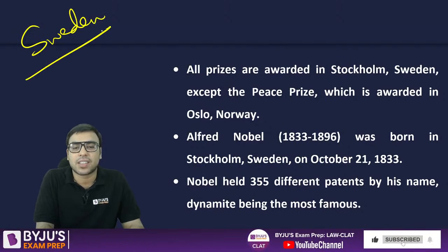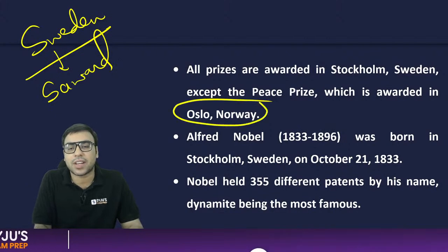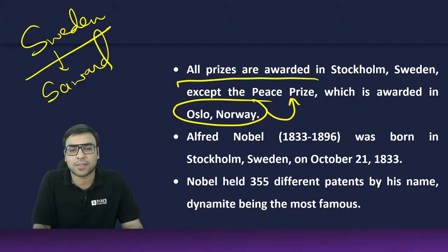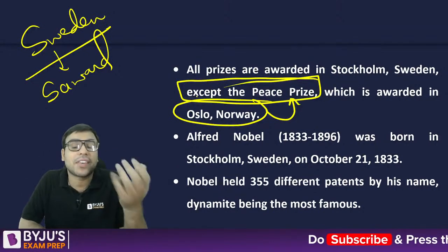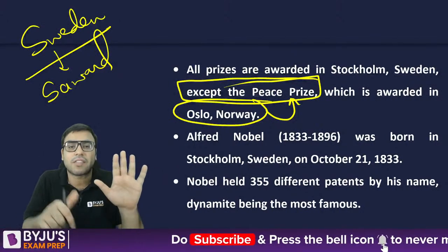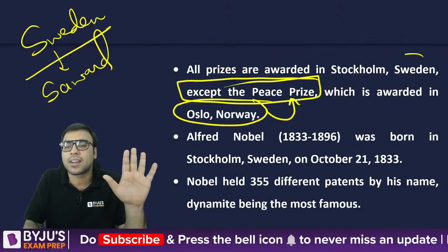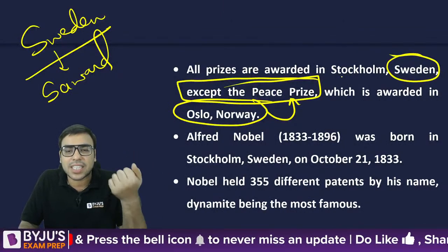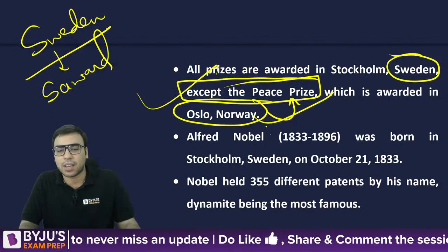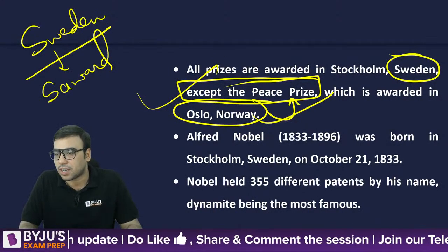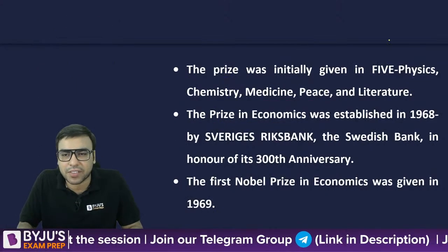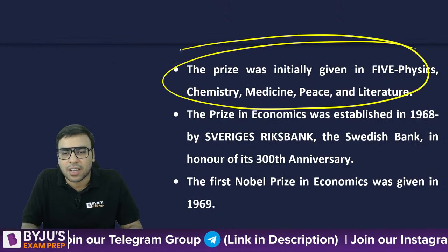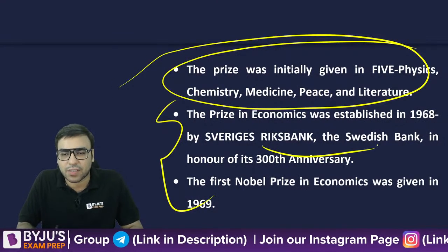Five awards out of six are given by Sweden, and the sixth — the Nobel Peace Prize — is given by Norway. Please remember this: five awards by Sweden, Peace Prize by Norway. The sixth economics prize was added later on.